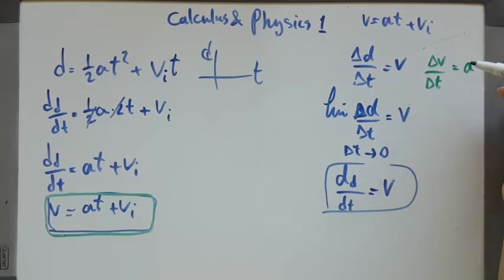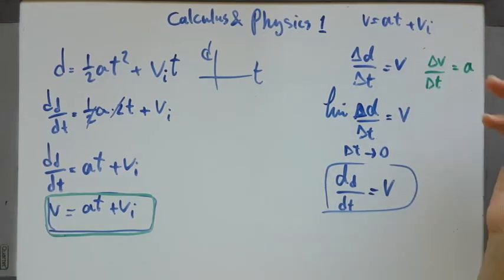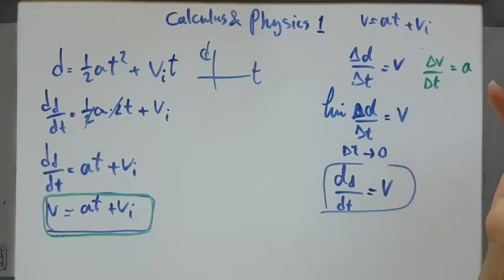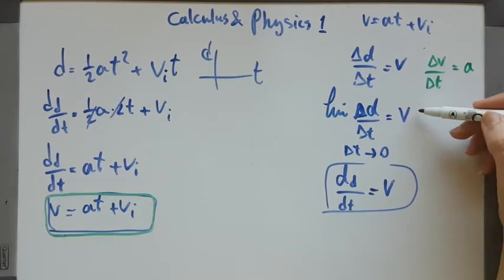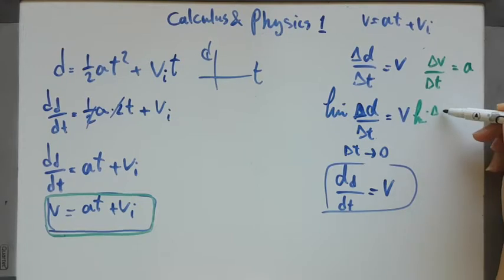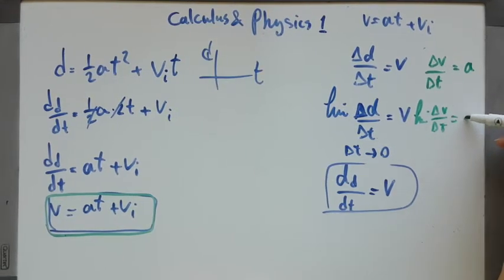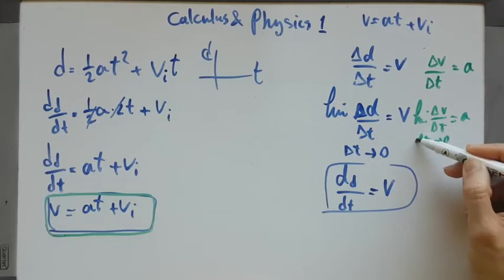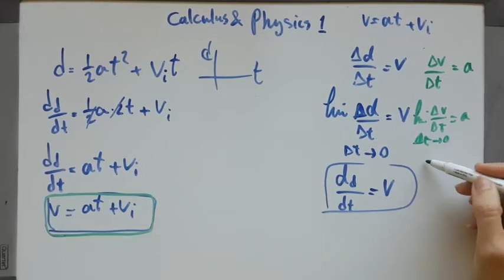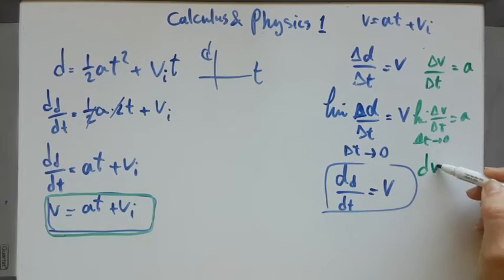Definitely, when the acceleration is not constant and you are looking for an instantaneous situation — or even if it is constant — the limit of delta V over delta T as delta T goes to zero is the derivative, and the derivative of V is actually A.